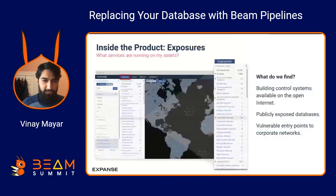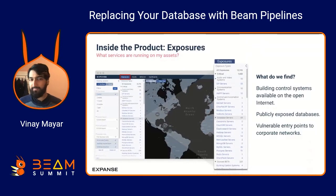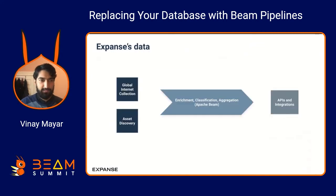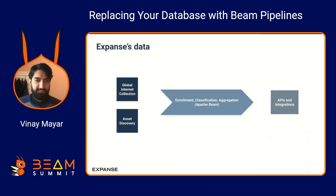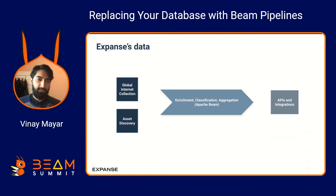A brief overview of what our products look like: we find things like open building control systems on the internet, publicly exposed databases that may have consumer information, and vulnerable entry points to corporate networks. This is a very high-level summary of what our data pipelines look like and where Beam fits in. We have a global internet collection system, asset discovery — we join those together, enrich data, classify it, apply aggregations. Almost all of that logic at Expanse is implemented in Apache Beam, and we use that to power APIs and customer-facing integrations.